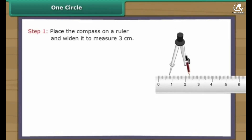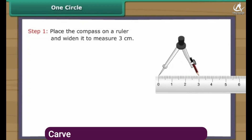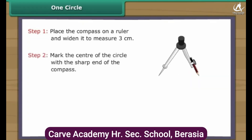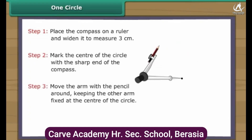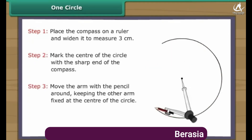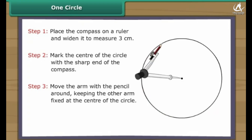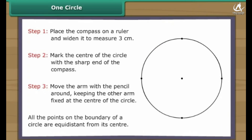Let us draw a circle with three centimeters radius. Place the compass on a ruler and widen it to measure three centimeters. Mark the center of the circle with the sharp end of the compass. Move the arm with the pencil around, keeping the other arm fixed at the center of the circle. The circle is formed. All the points on the boundary of a circle are equidistant from its center.